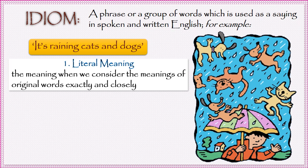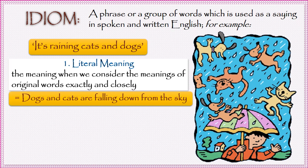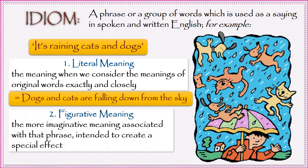The first is the literal meaning, which is the meaning when we consider the meanings of original words exactly and closely. Literally, our example phrase would mean that dogs and cats are falling down from the sky, which we know is not possible. So phrases are not always meant to be taken literally. Sometimes the speaker intends to create a special effect by using the more imaginative meaning associated with that phrase, which is known as the figurative meaning.